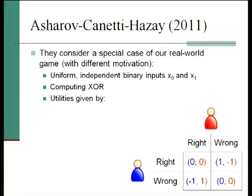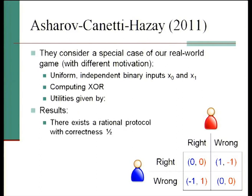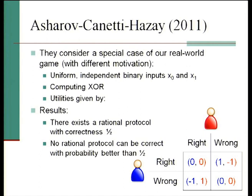They look at the following specific utilities: if both parties give a right answer or both give a wrong answer, no utility is gained by either party. What you're trying to do is get the right answer when the other party does not. If you do that, you get utility one; if the other person does that, you lose utility one. Their results show a protocol with correctness one-half, but also that you can't get a protocol with correctness better than one-half — which seems like a pretty limiting impossibility result.